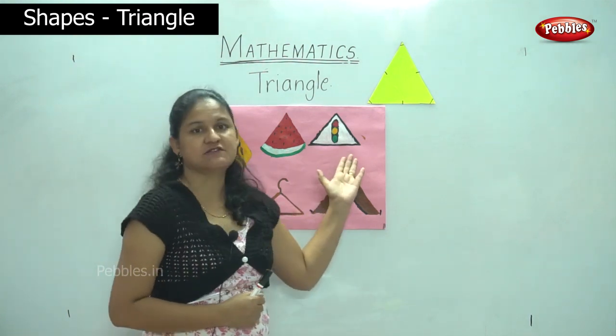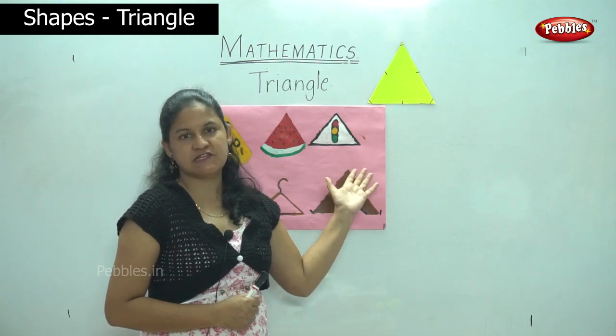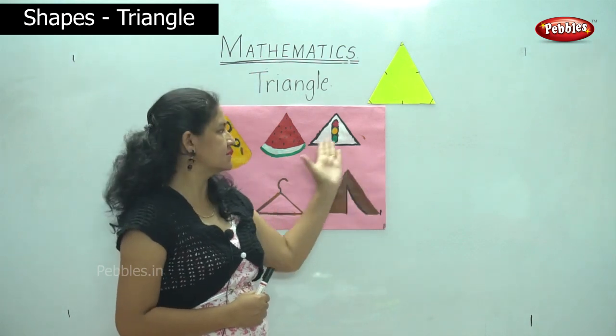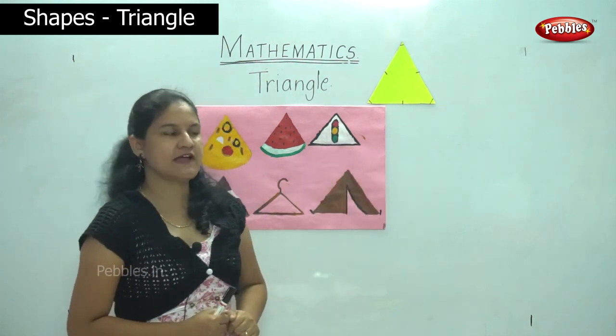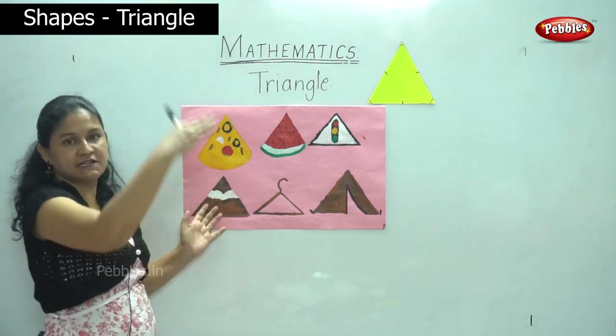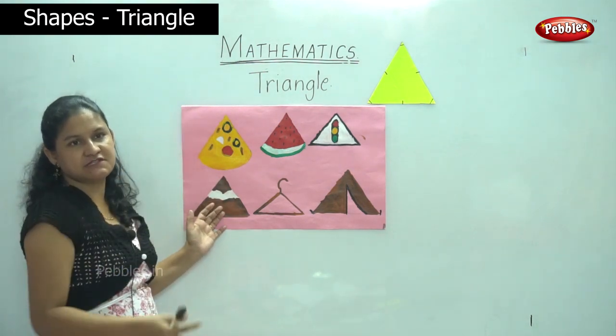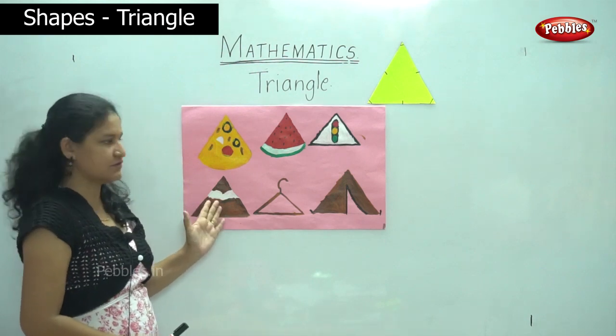The next is your traffic signal. If you see the traffic signal on the road, it is in the shape of a triangle. The next is the hills or the mountains. They all are in the shape of the triangle.